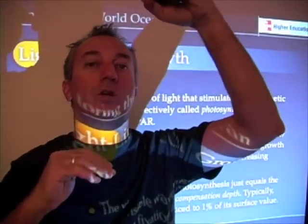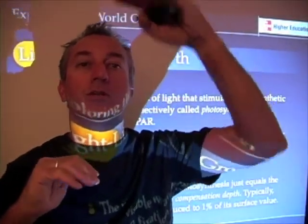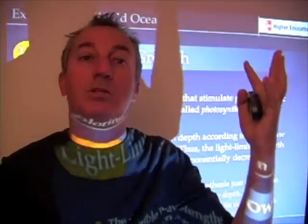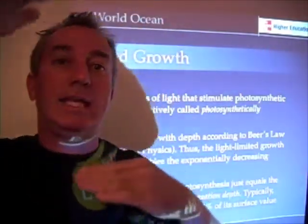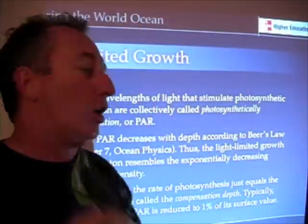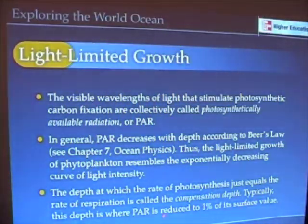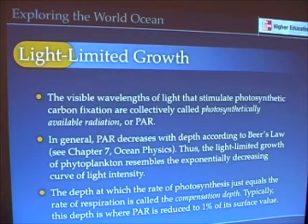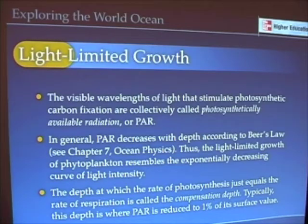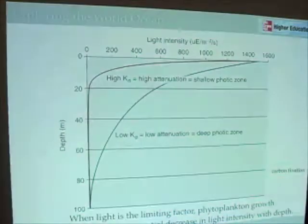The euphotic zone is generally considered the photosynthesis zone in the upper ocean — from the surface down to where photosynthetically available radiation (PAR) is reduced to 1% of its surface value.